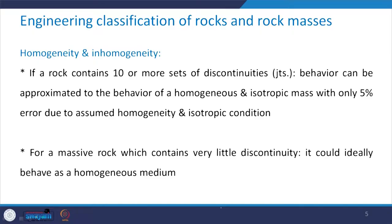Before I go further, let us take a look at the concept of homogeneity and inhomogeneity in the context of rocks. This is very interesting. If a rock contains 10 or more sets of discontinuities or joints, then its behavior can be approximated to that of a homogeneous and isotropic mass, with an error of only 5% because of this assumed homogeneity and isotropic condition. That means if you have more number of discontinuities, the material can be considered as homogeneous and isotropic mass with not much error — marginally only 5% error. For a massive rock which contains very little discontinuity, it could ideally behave as a homogeneous medium.